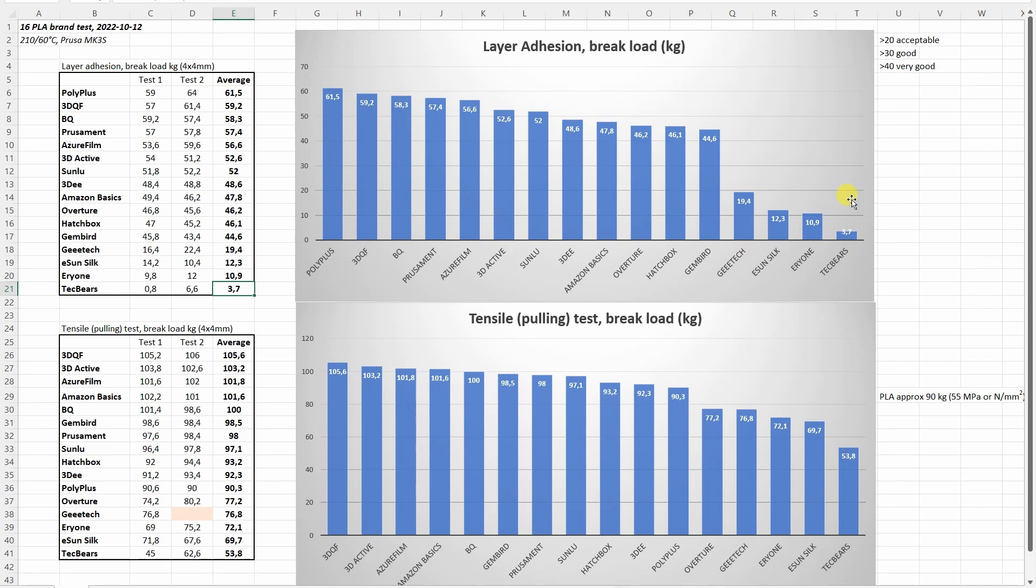I noticed the silk filaments are usually a little bit weaker. Maybe they require a little bit higher temperatures. Eryone is not silk but I noticed I got the same results when I tested them in a different video. Basically this is their weakest filament so they have PLA plus and PETG and they are much stronger.